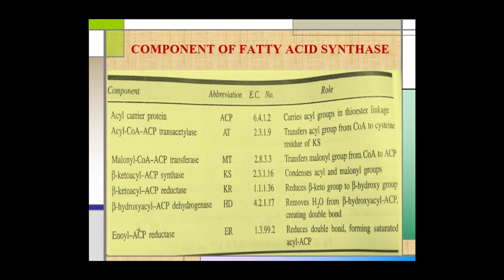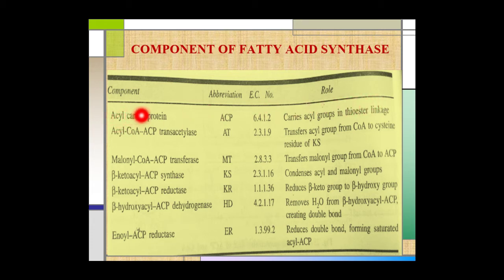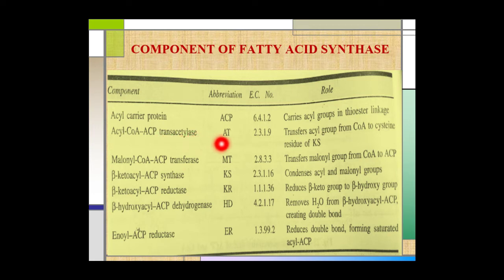The seven components of the fatty acid synthase enzyme complex are as follows. The first is the acyl carrier protein (ACP), located in the center, which carries acyl groups in thioester linkage. The second component is acyl coenzyme A-ACP transacetylase, abbreviated as AT, and its role is to transfer the acyl group from coenzyme A to the cysteine residue of KS.